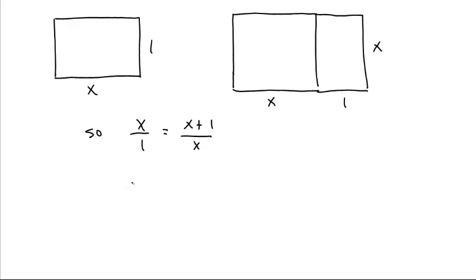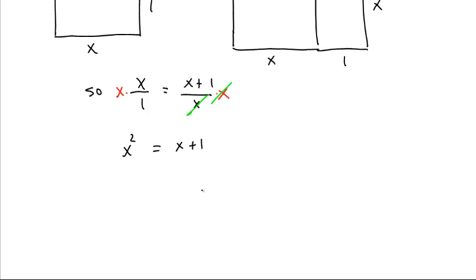And we can cross multiply. People in the class don't seem all that comfortable with cross multiplying. That is, you multiply both sides by x, and that cancels this one out. And so we're left with x squared equals x plus 1, or x squared minus x minus 1 equals 0, which is solvable with a quadratic equation.